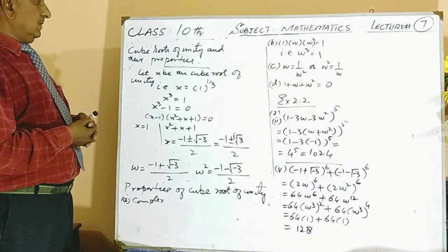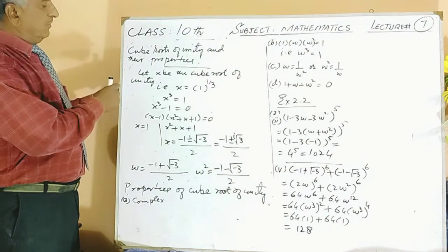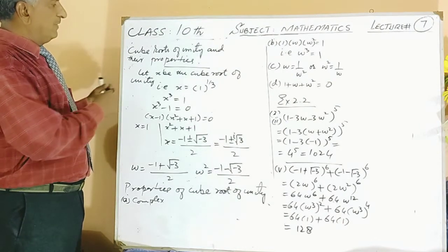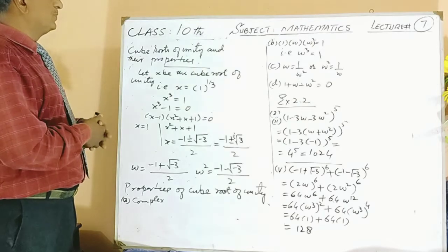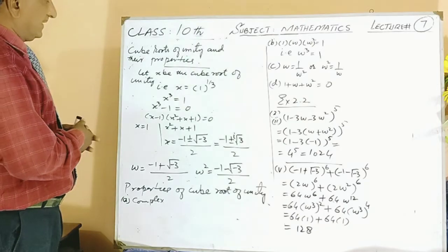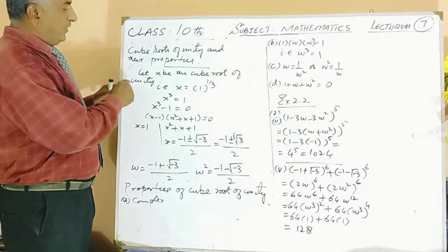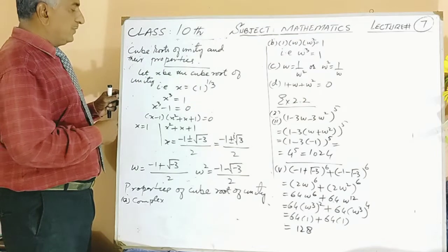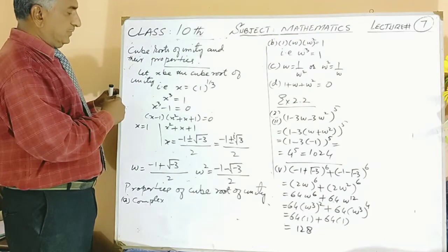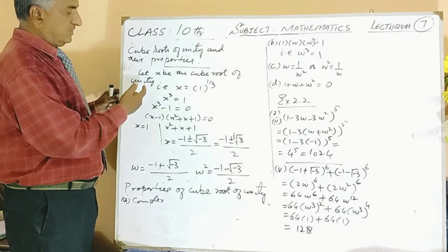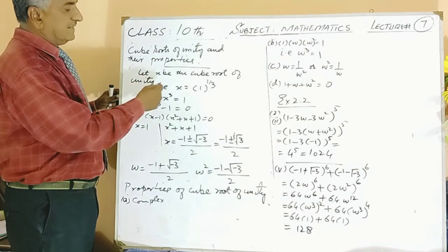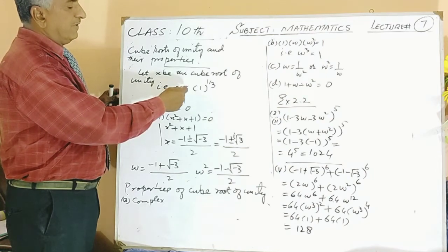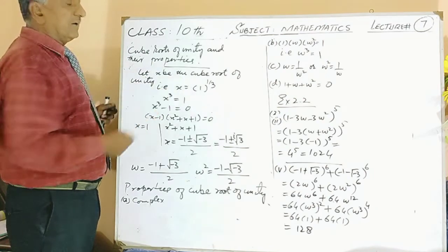We will start with this topic: how you will find the cube roots of unity. If you are going to find the cube roots of unity, then you should suppose x equal to 1 raised to the power 1/3.